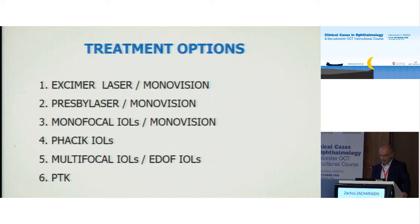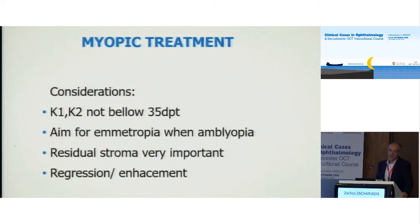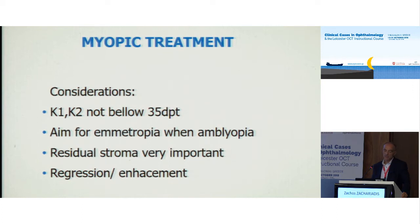The last option is phototherapeutic keratectomy for some cases. When performing myopic laser treatment, our considerations are always the K1 and K2 readings. Every diopter we correct means one diopter of K readings going down. We should aim for emmetropia unless there is amblyopia or some macular problem. Always keep residual stroma over 300 microns.